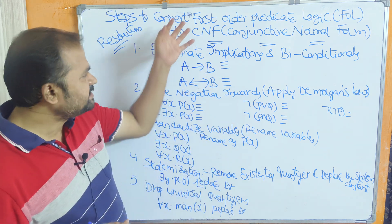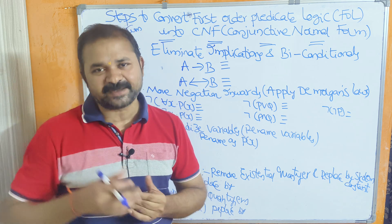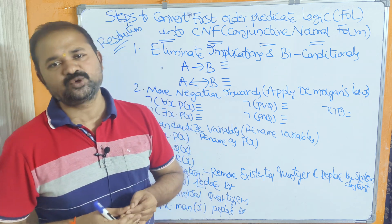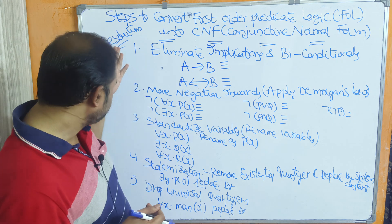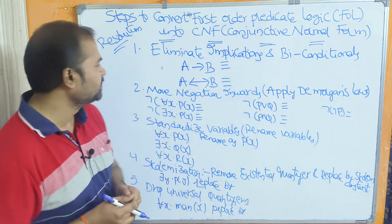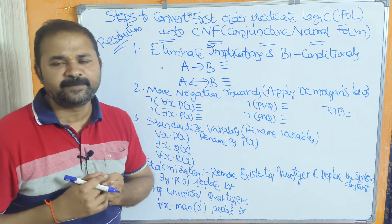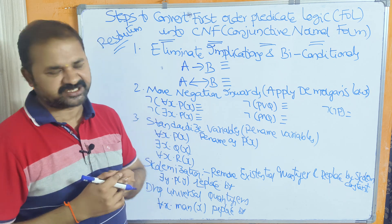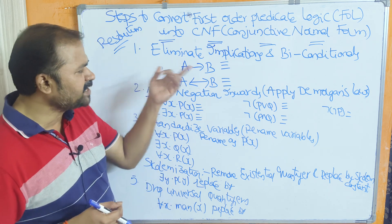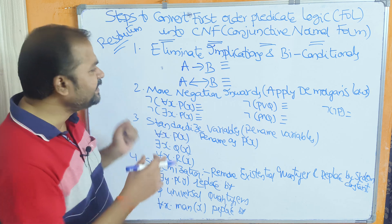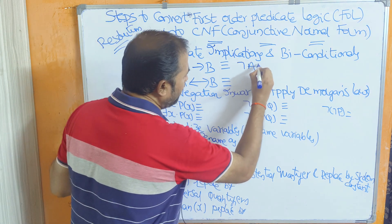First, let us see how to convert predicate logic statements into conjunctive normal form. We need to follow five steps. Step one: eliminate implications and biconditionals. If a statement is in the form A implies B, then it is replaced by negation A or B.